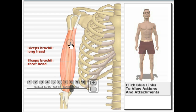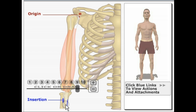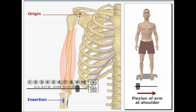Here we have the biceps brachii muscle — it's called biceps because it has two heads. The long head originates on the supraglenoid tubercle of the scapula and inserts on the radial tuberosity of the radius. The short head originates on the coracoid process of the scapula and also inserts on the radial tuberosity of the radius. The main action the biceps perform is flexion of the arm at the shoulder; it also flexes a supinated forearm and supinates the forearm.